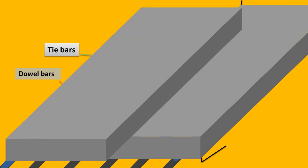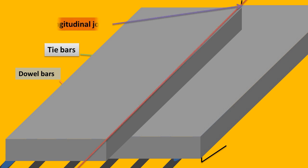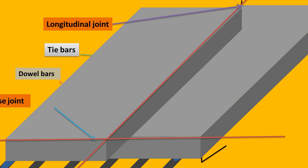The longitudinal joint divides the pavement into different lanes, and the transverse joint is perpendicular to the center line and is also called a construction joint. Now I'm going to show you two conditions: first, without placing a dowel bar in a PQC road, and second, with placing the dowel bar in a PQC road.